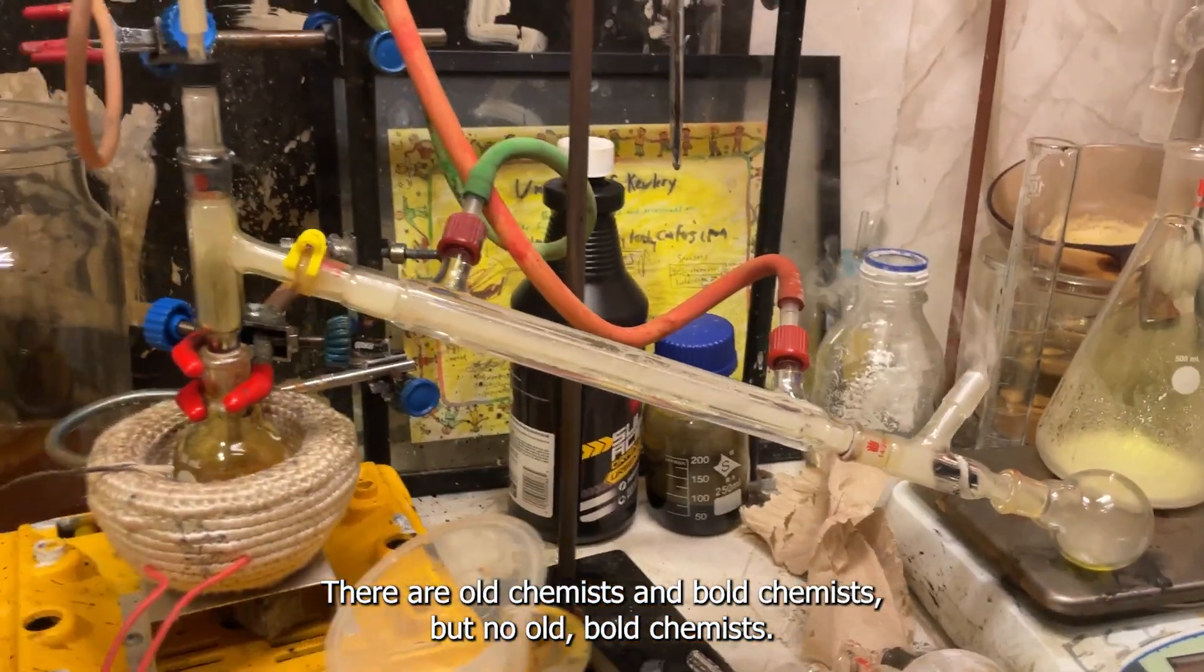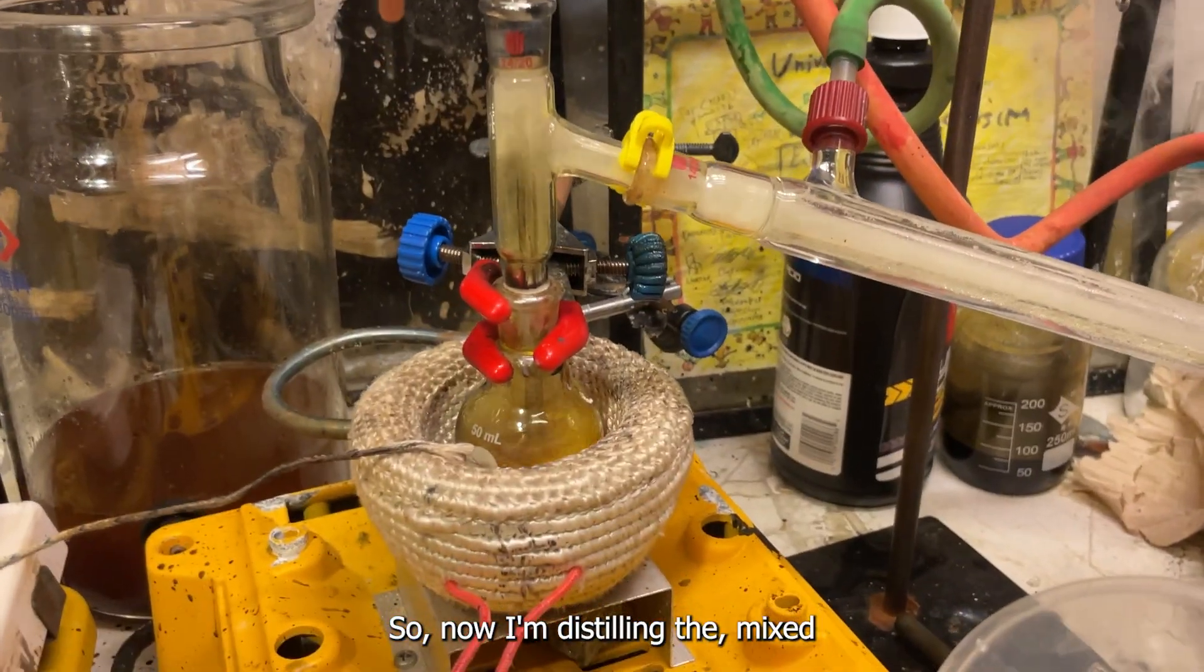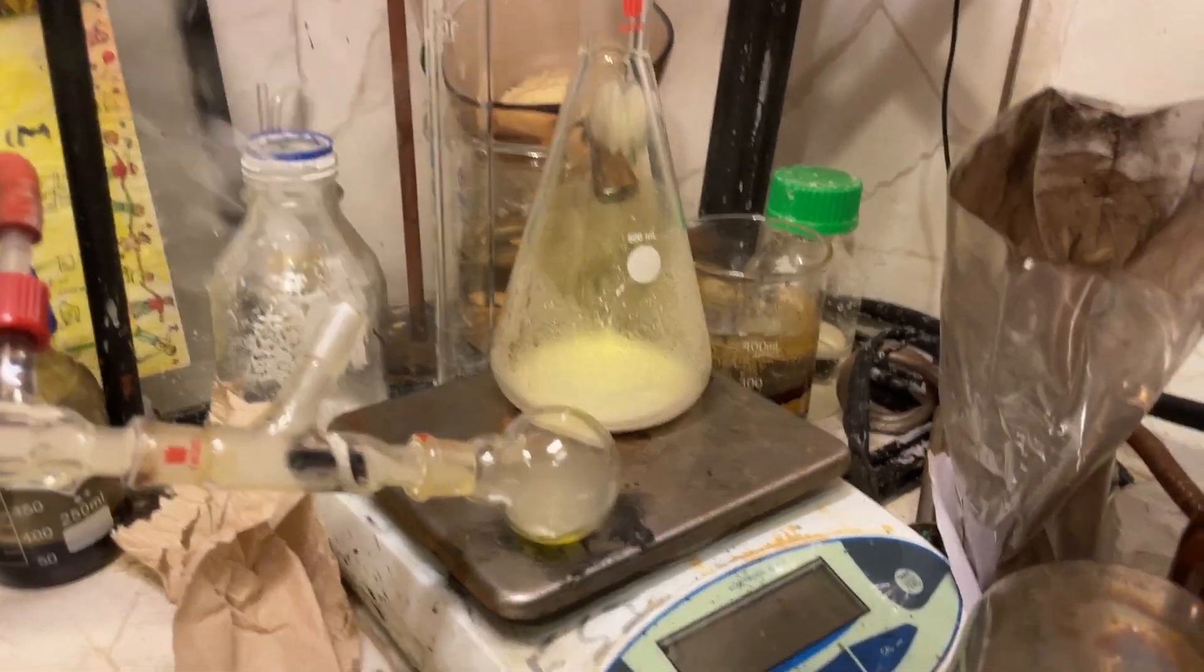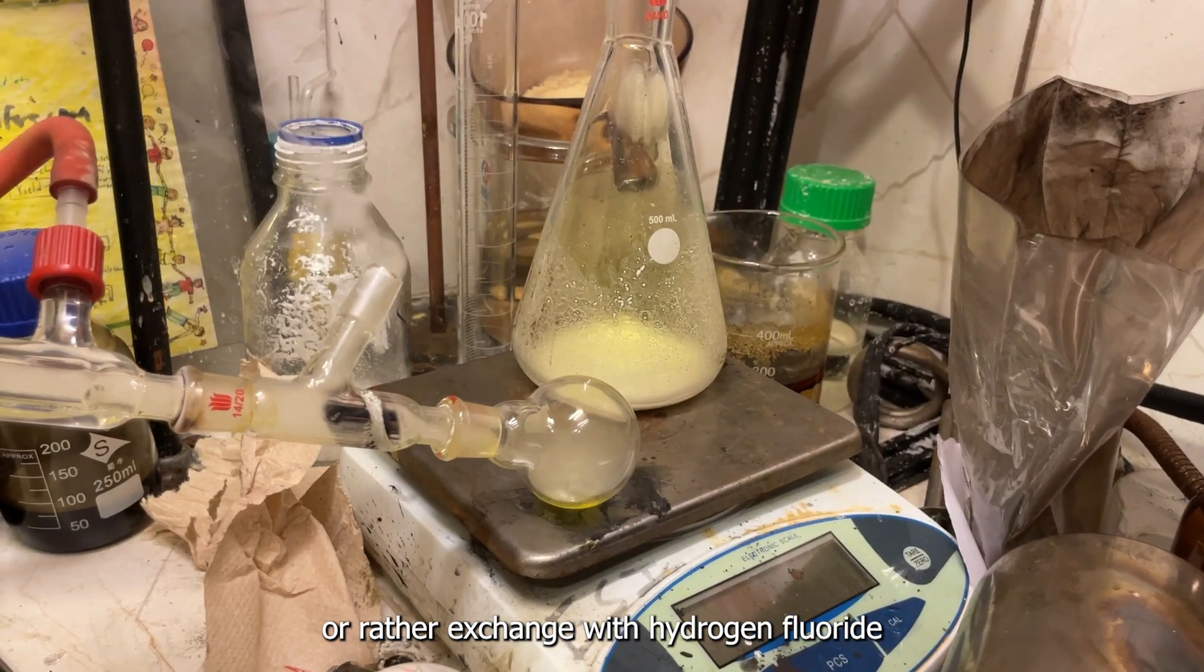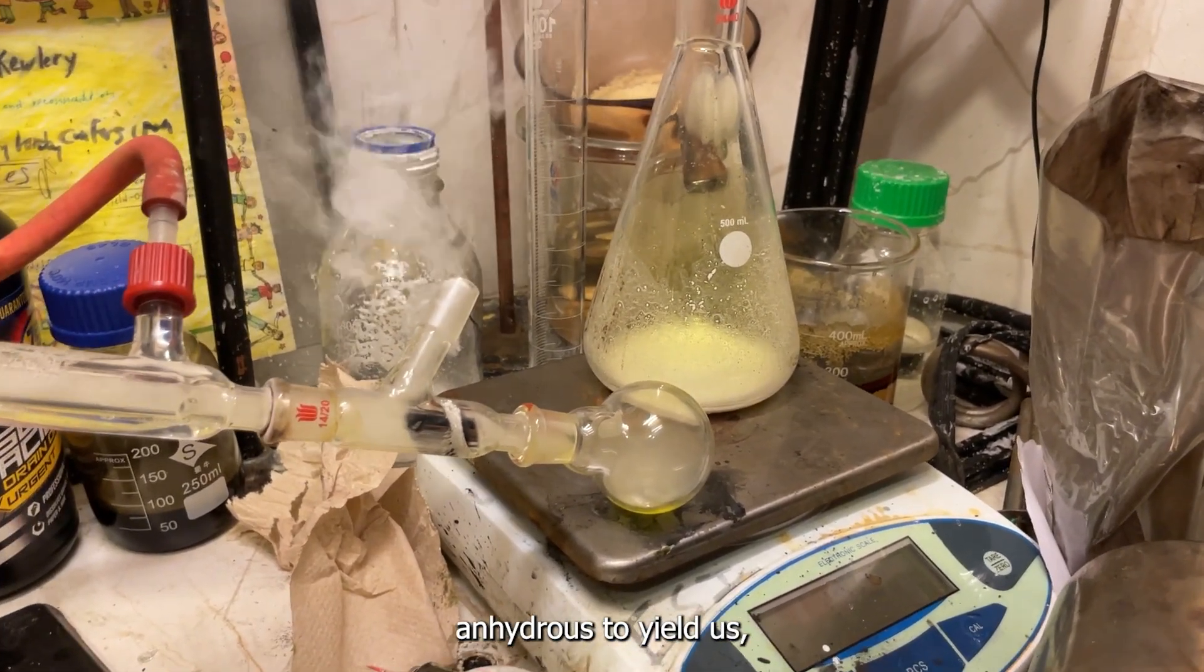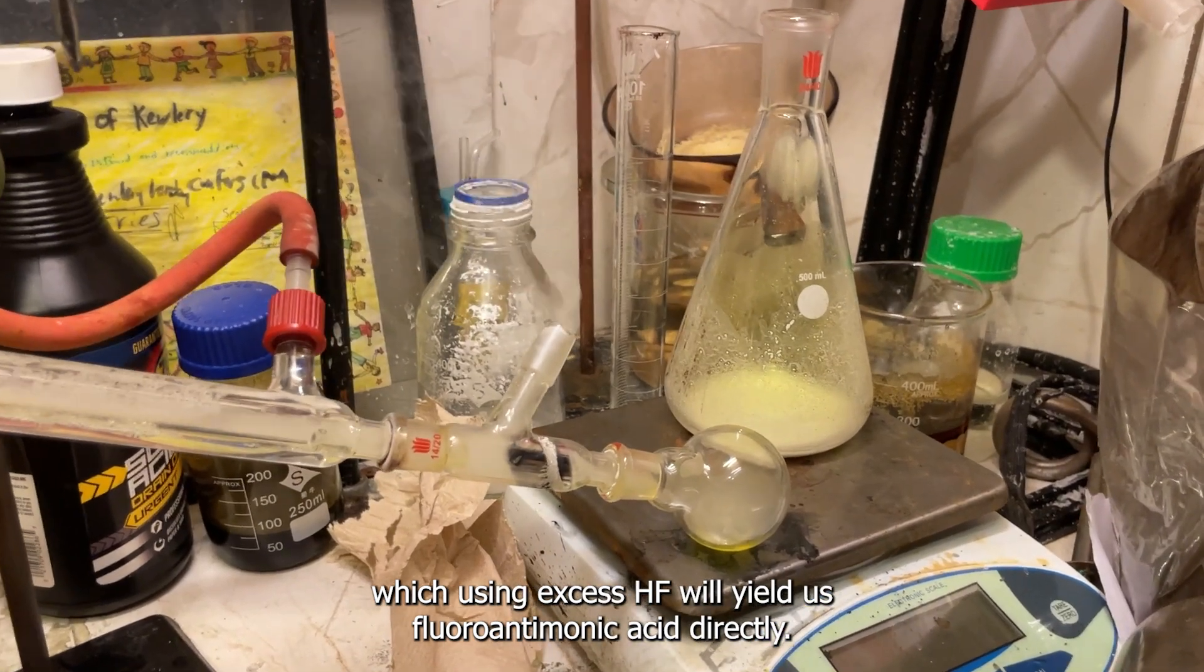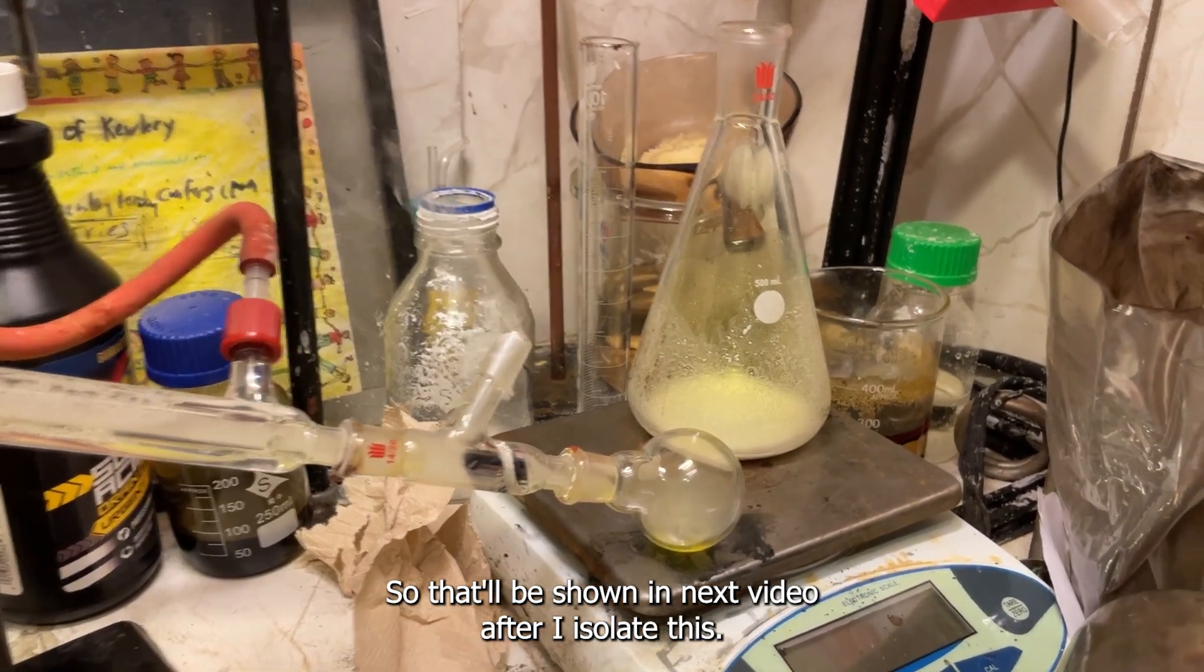There are old chemists and bold chemists, but no old bold chemists. So now I'm distilling the mixed chlorides under a stream of chlorine gas. And this should yield us pure pentachloride, which then we can fluorinate, or rather exchange, with hydrogen fluoride, anhydrous, to yield us antimony pentafluoride in situ. Which, using excess HF, will yield us fluoroantimonic acid directly. So that will be shown in the next video after I isolate this pentachloride here.